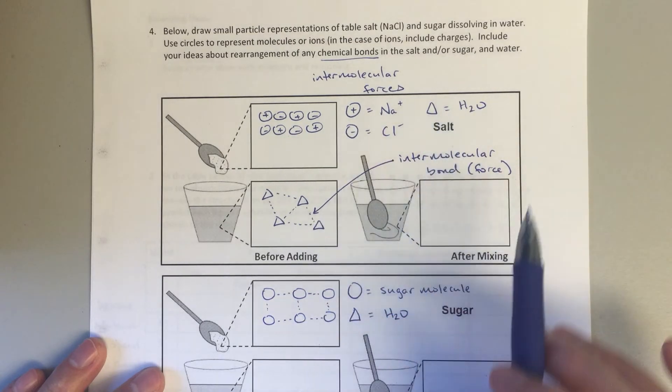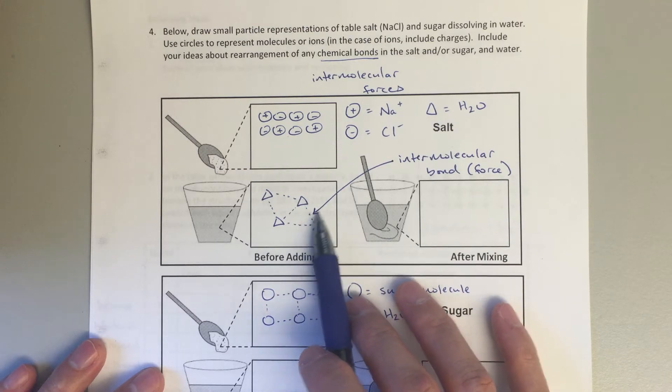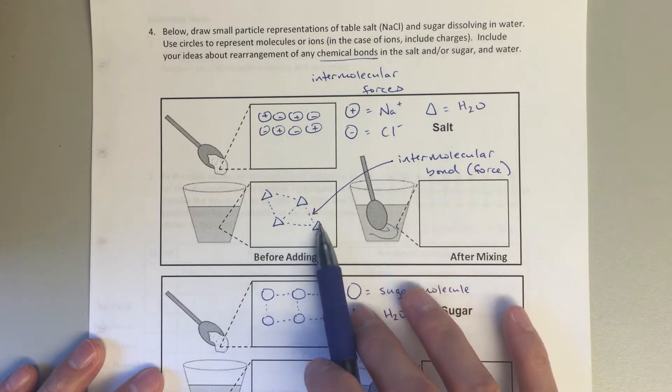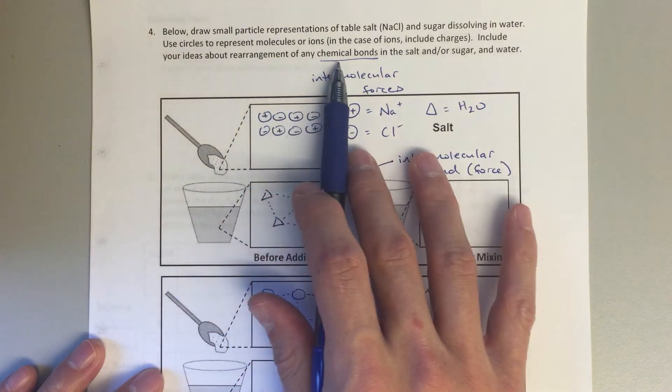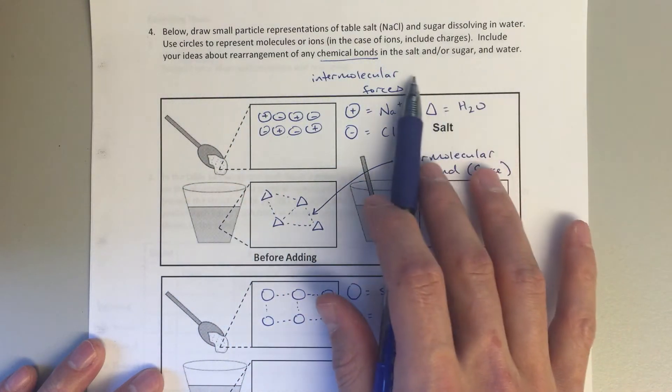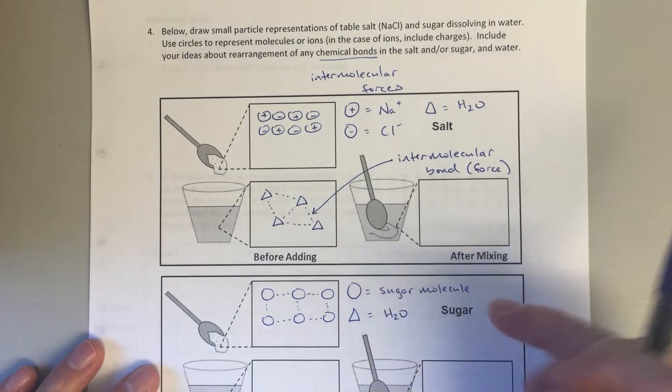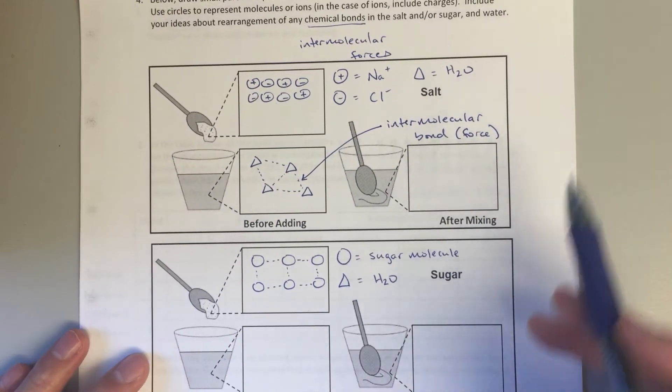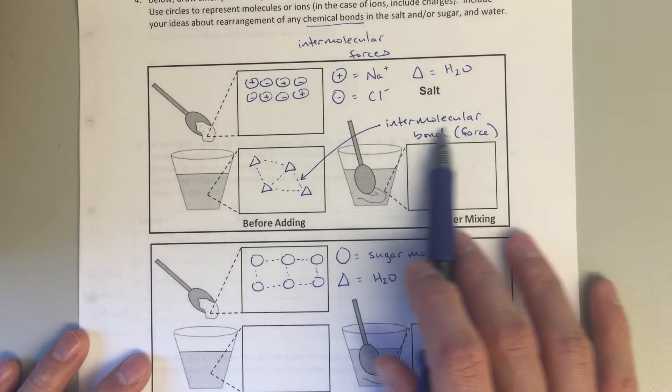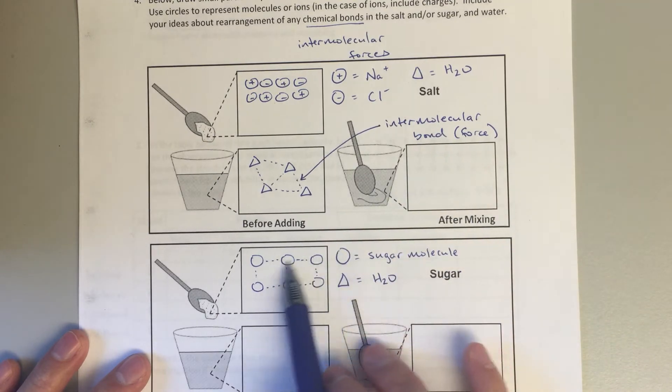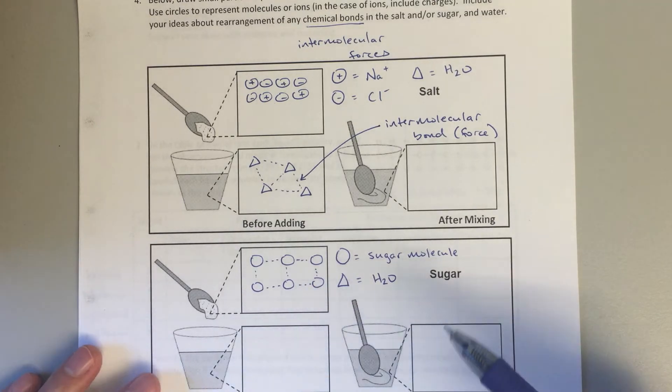The other thing that I've shown in here is these dotted lines between the water molecules—this is my intermolecular bond or intermolecular force between two water molecules. I think here in the question where it says 'include your ideas about rearrangements of any chemical bonds in the salt and/or sugar,' I think that's really trying to talk about intermolecular forces, not bonds within the sugar molecule, for instance. So for the sugar molecule, I'm just using a circle, and then again I'm showing these dashed lines to indicate intermolecular bonds or intermolecular forces between the two sugar molecules. These sugar molecules will be attracted to one another to some extent—they'll be held together, and we want to indicate that.